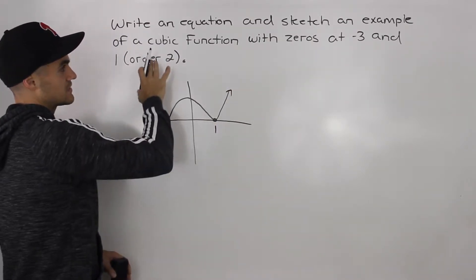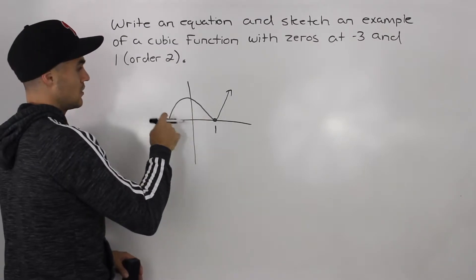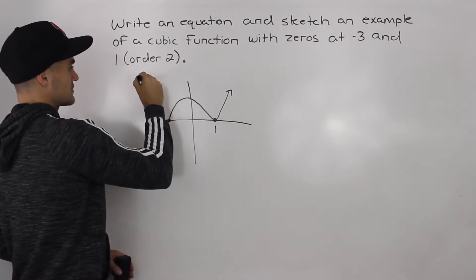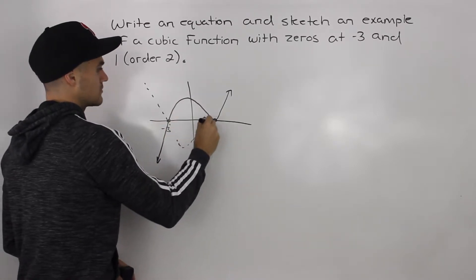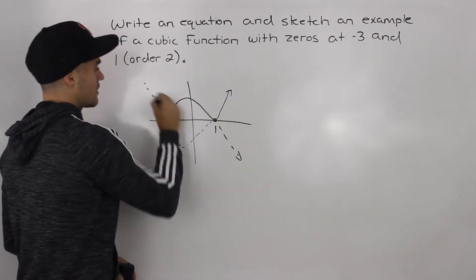Now, notice how they didn't give us any other point. So we could have also started this function up here. So we could have went through negative 3 this way, got to positive 1, and then maybe bounced off that way.